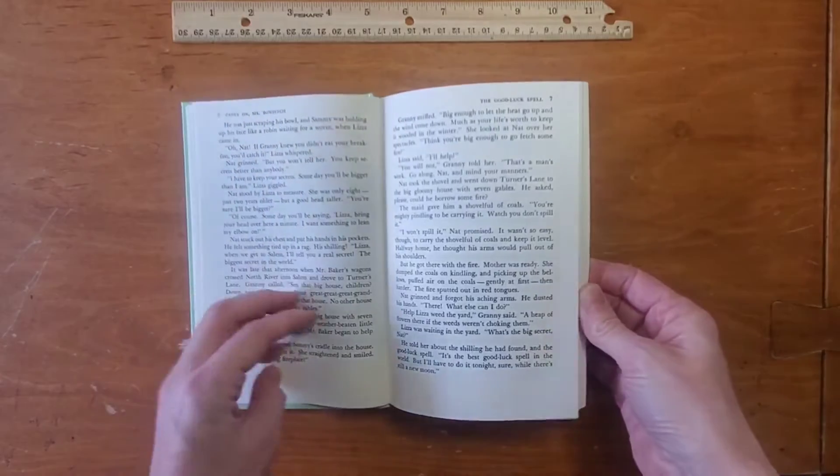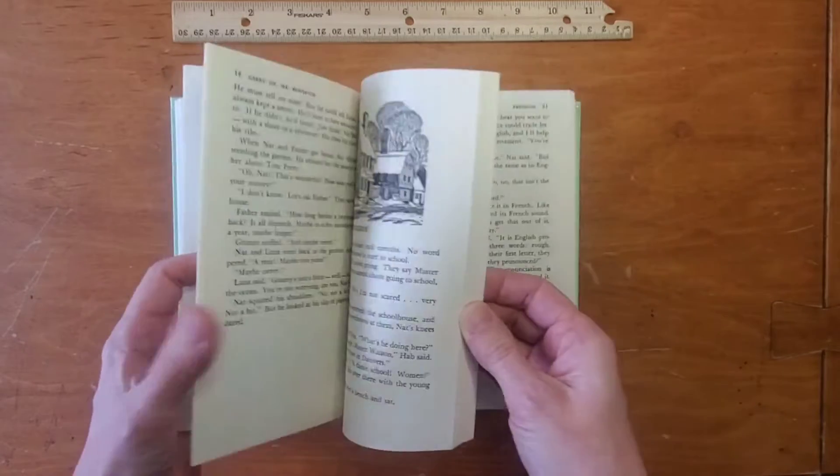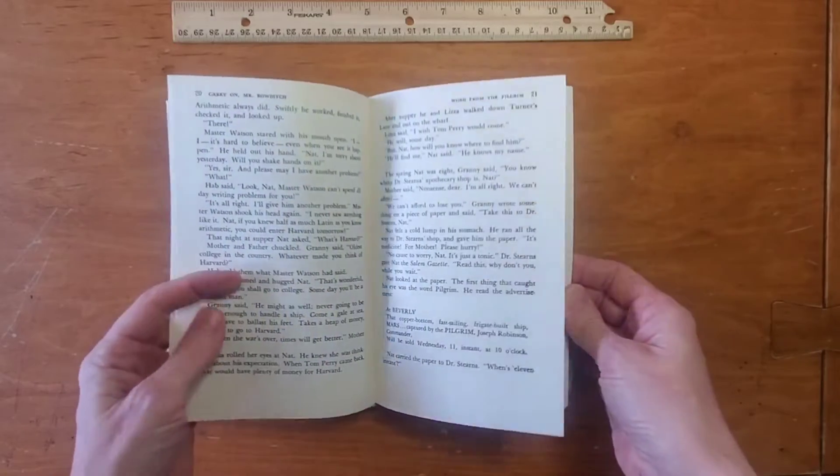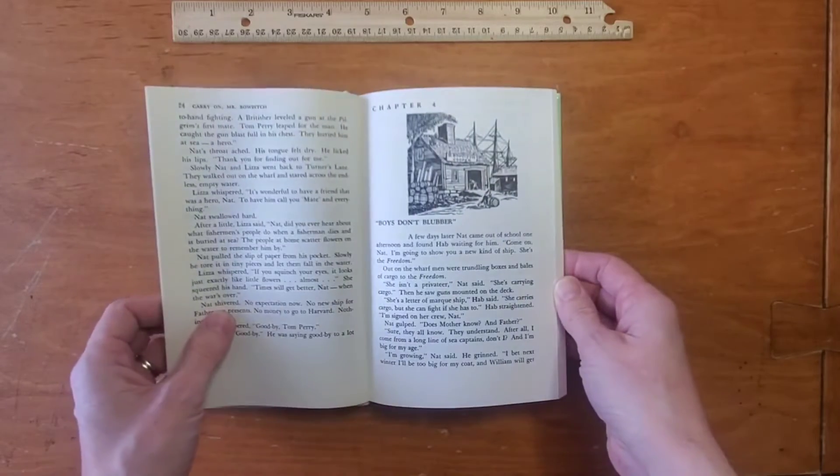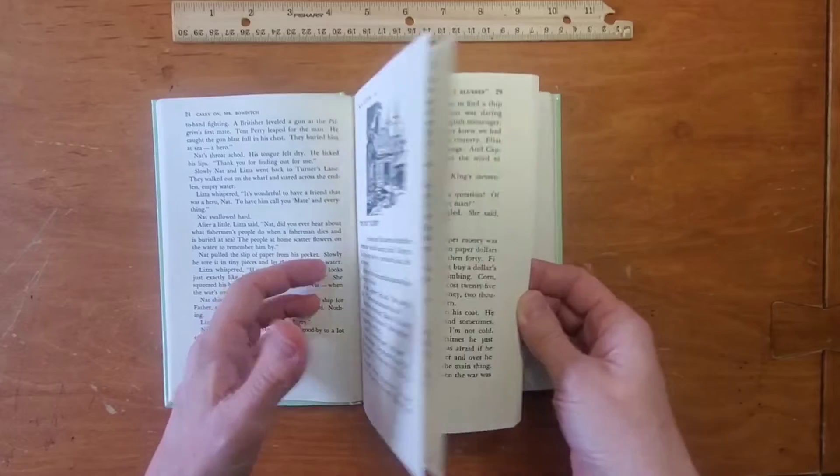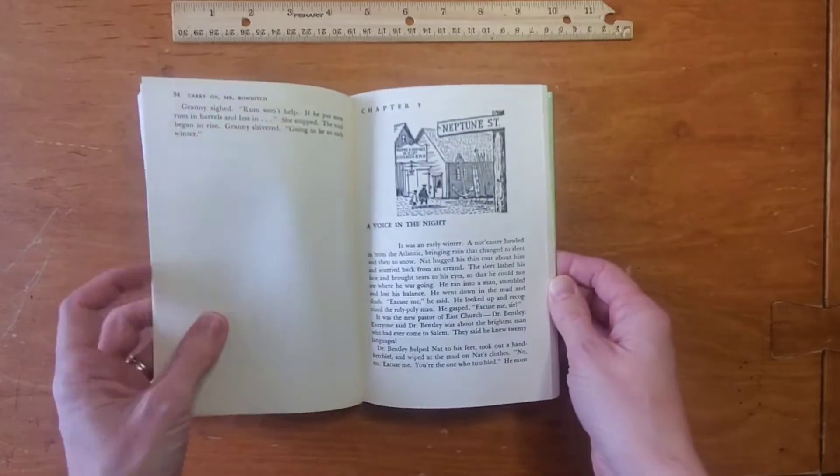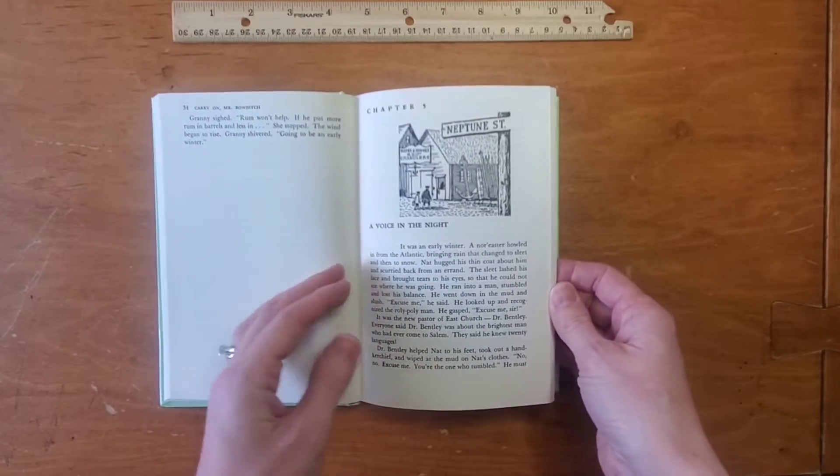It starts off as him being a little boy raised by a sailor who had become a cooper because his ship had crashed. He wanted to go to school. He was really good at mathematics, but he ended up having to stop going to school early because he needed to help his father.